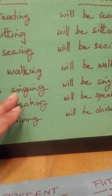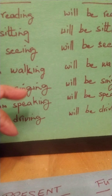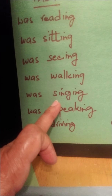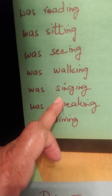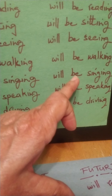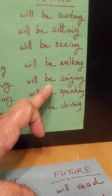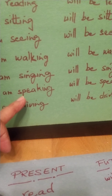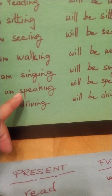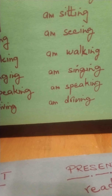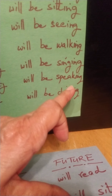Another example: singing. Bhutkaal — past tense: I was singing. Or bhavishya: I will be singing. Another example: speaking. I am speaking. I was speaking. I will be speaking.